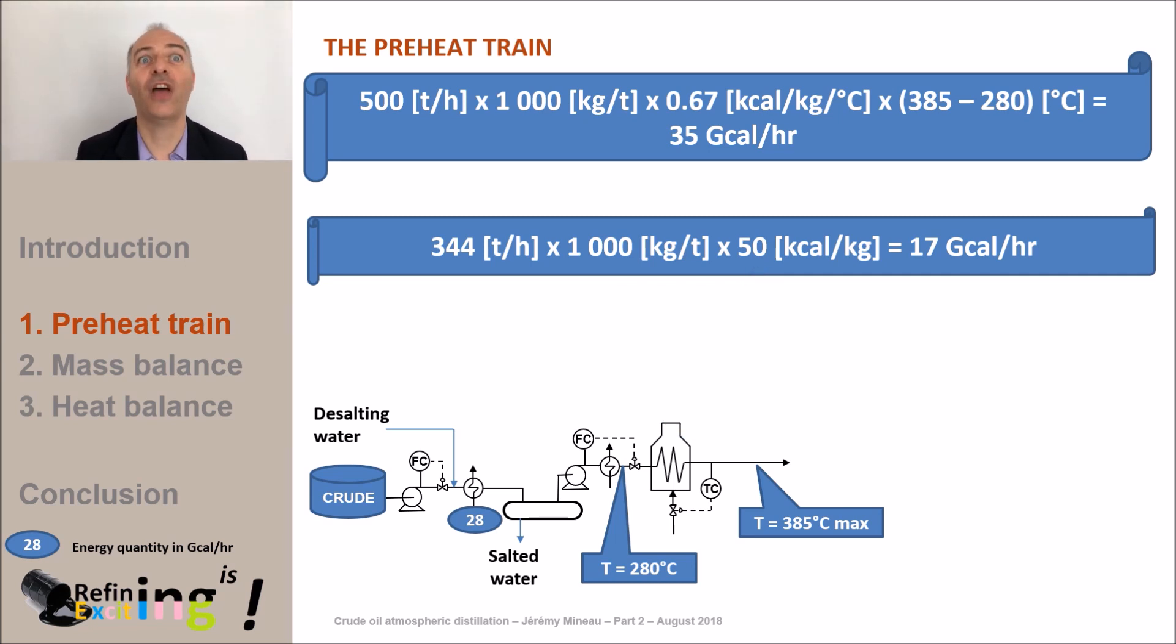So, in the end, the amount of energy that we will have to supply is 35 plus 17 equals 52 gigacalories per hour. This is equivalent to 5 to 6 tons per hour of burnt fuel.